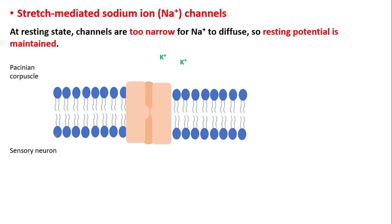Resting potential is the electrical difference between both sides of the membrane when the sensory neuron is at rest with no stimulus. The channel proteins are too narrow for sodium ions to cross. Resting potential is maintained through the transport of potassium ions into the sensory neuron, as the channels are much more permeable to potassium ions. The resting potential is actually negative — around minus 70 millivolts.